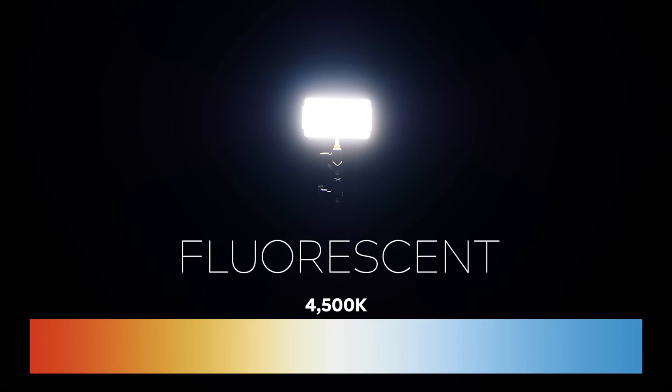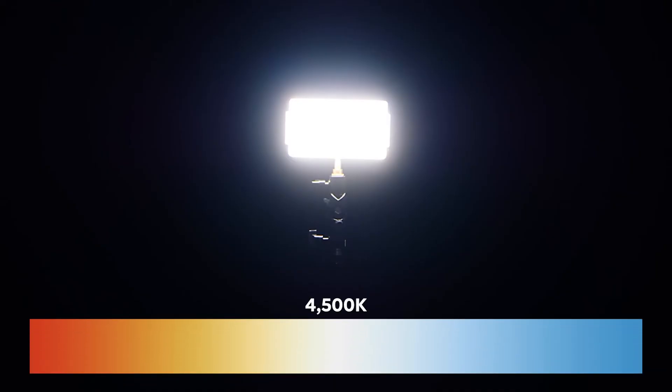Next up the scale is 4500 degrees Kelvin which is the colour temperature of most standard fluorescent globes that you'd find in an office block. In this example scale we've set our camera's custom white balance to this colour temperature so it will appear to be neutral white. We'll be talking more about the relationship between white balance and Kelvin in the next video.